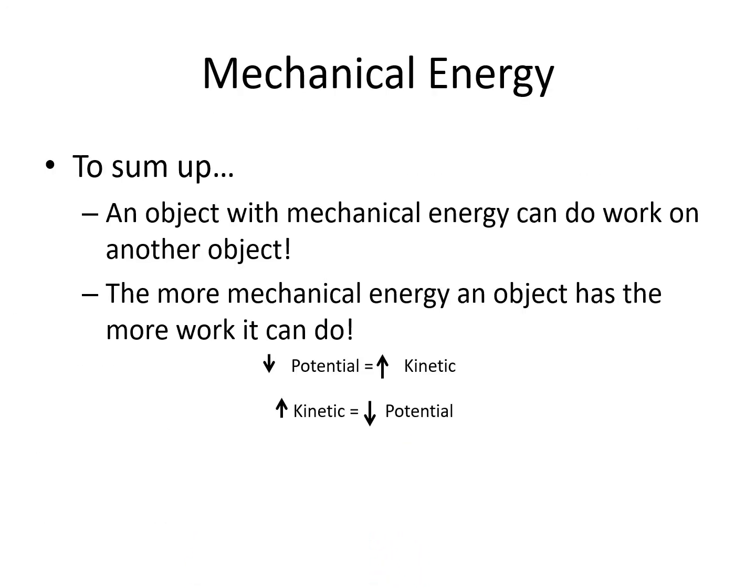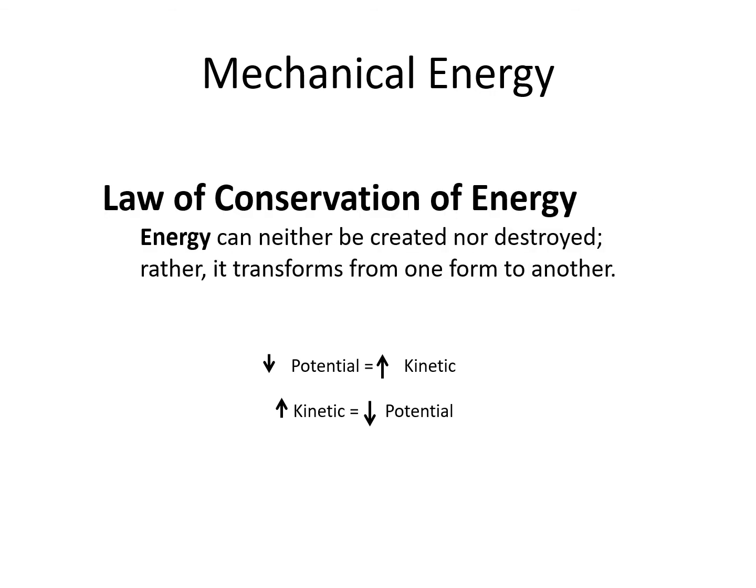To sum up, an object with mechanical energy can do work on another object. The more mechanical energy an object has, the more work it can do. And finally, energy can neither be created nor destroyed. It can only be transformed from one form to another. So, as potential energy decreases, kinetic energy increases, and vice versa.